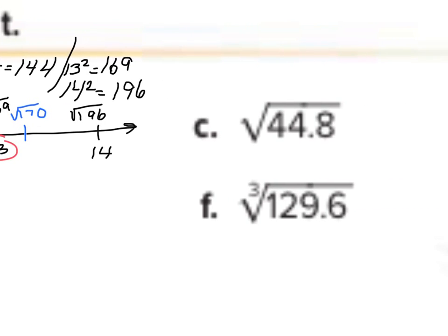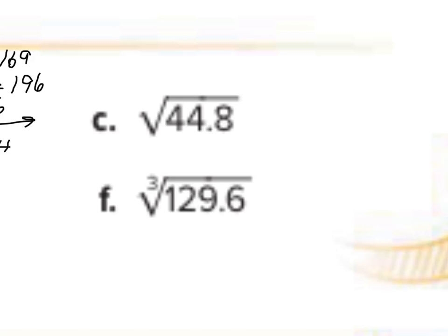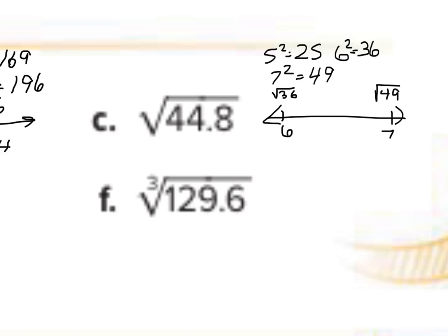Moving on to c. The square root of 44.8. All right. Well, 5 squared is 25. That's too small. 6 squared is 36. That's still smaller. 7 squared is 49. So it looks like it's going to be somewhere between 6 and 7. And if we look at a number line now, we can plot 6 here, 7 here. Now, the square root of 36 was 6. The square root of 49 was 7. And 44.8, well, that's a little closer to 49. So 44.8 is closer to 49 than it is 36. And so our answer is going to be 7.